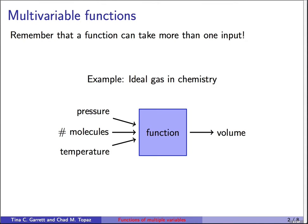I want to give you a few classic examples of these multivariable situations. One example is an ideal gas in chemistry. If you know a gas's pressure, the number of molecules, and the temperature that it's stored at, then there's a function that can give you as an output the volume that gas should take up.